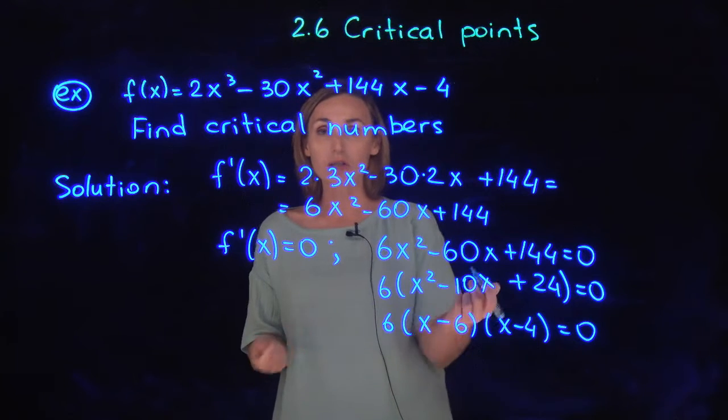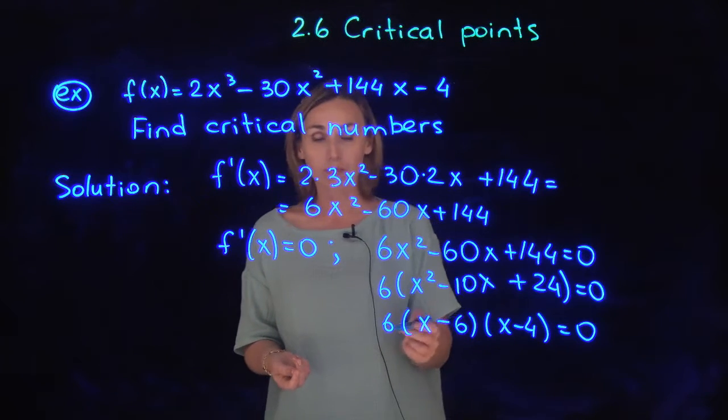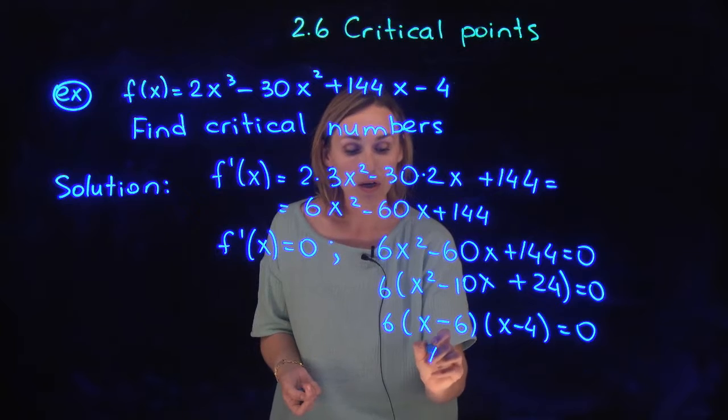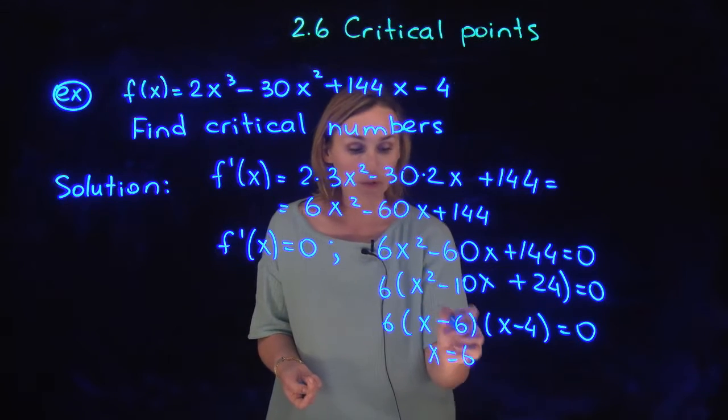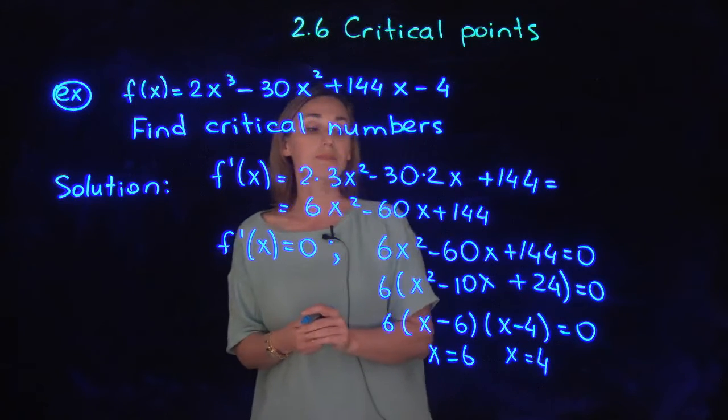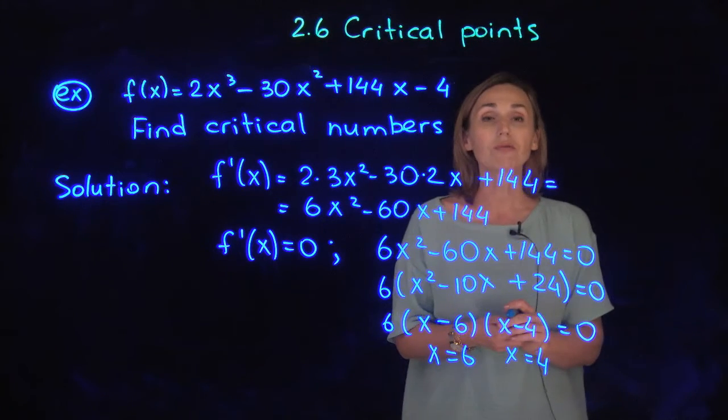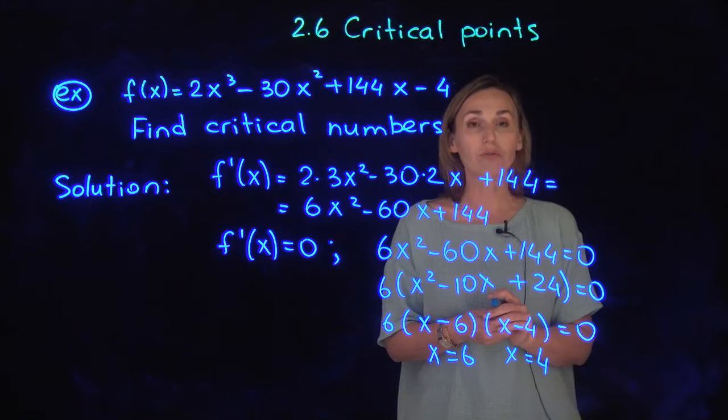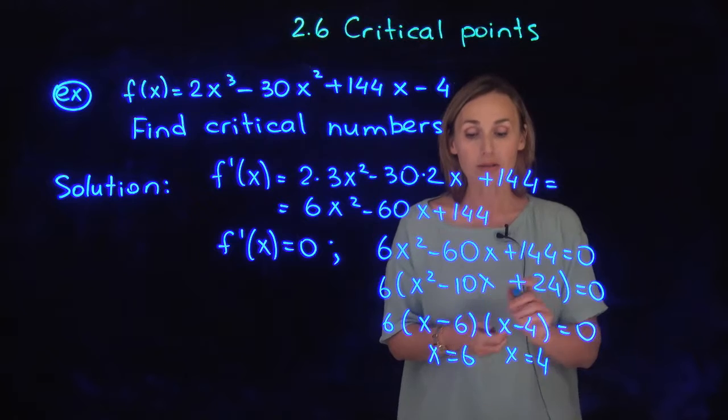How to make it equal to zero? 6 cannot be zero, so this factor could be zero and this factor could be zero. So x could be positive 6 from here and x could be positive 4 from here. Those values 6 and 4 are critical values of the function. They are the values where the derivative is zero.